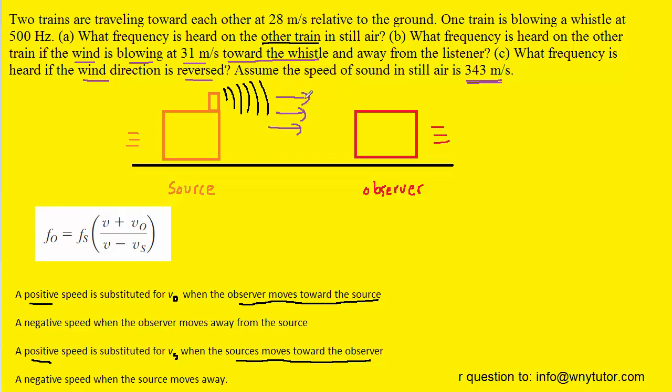And because the wind is blowing in the same direction as the direction the sound is moving that means the speed of sound is actually going to increase. So we can take the regular speed of sound in still air and this time we're going to add 31 meters per second onto that value.